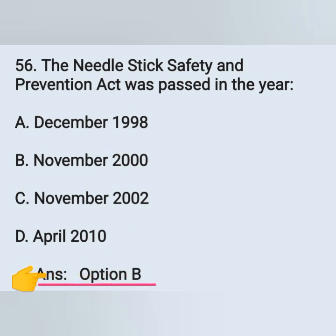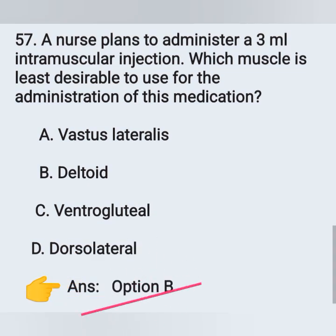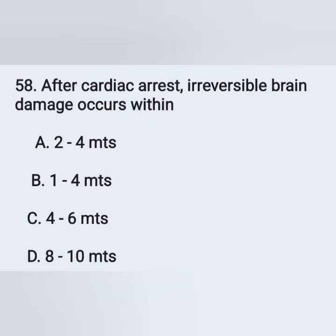Question 57: A nurse plans to administer a 3 ml intramuscular injection. Which muscle is least desirable to use for the administration of this medication? The nurse wants to give a 3 ml IM injection, and the least suitable muscle is the deltoid — Option B is the correct answer.